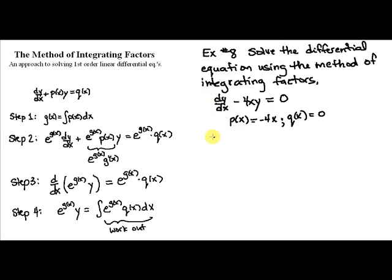Step one is to find what I called g(x), which is the anti-derivative of p(x), which is going to be negative 4 times x squared over 2, or negative 2x squared. And we don't need the c, we just go with c being equal to 0.